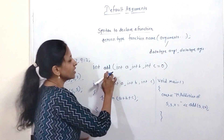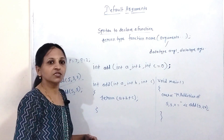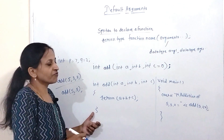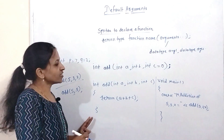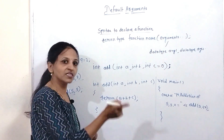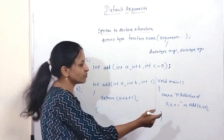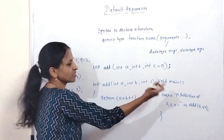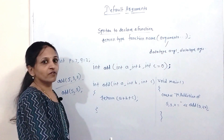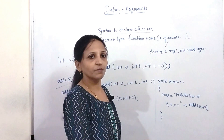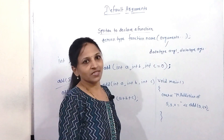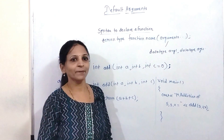One more important point: I have written a function declaration here. Default values can only be set inside the function declaration, not the definition. Normally, if you define the function before calling it, there is no need to write a separate declaration. But if you want to set any default value, you must write a function declaration, because default values can only be specified in the function declaration. This is all about the default argument concept in C++.